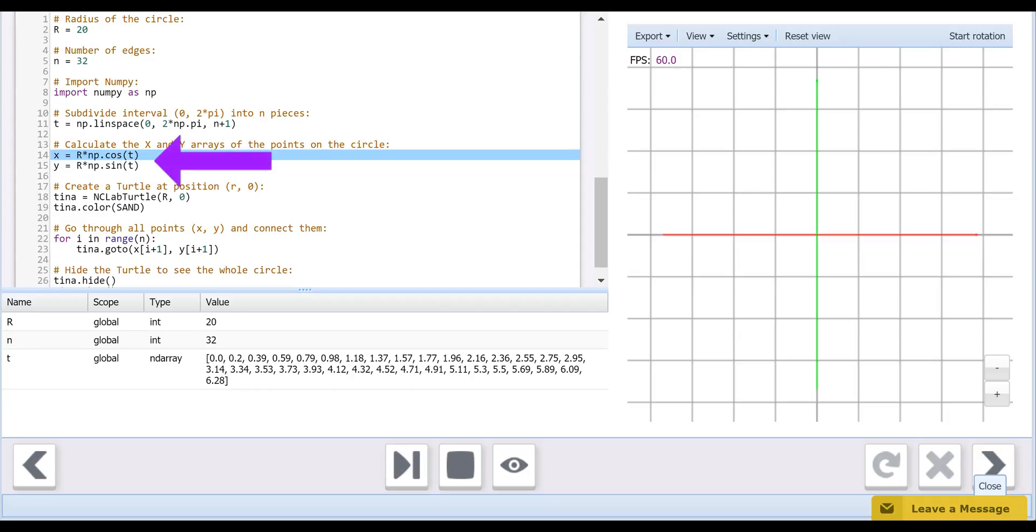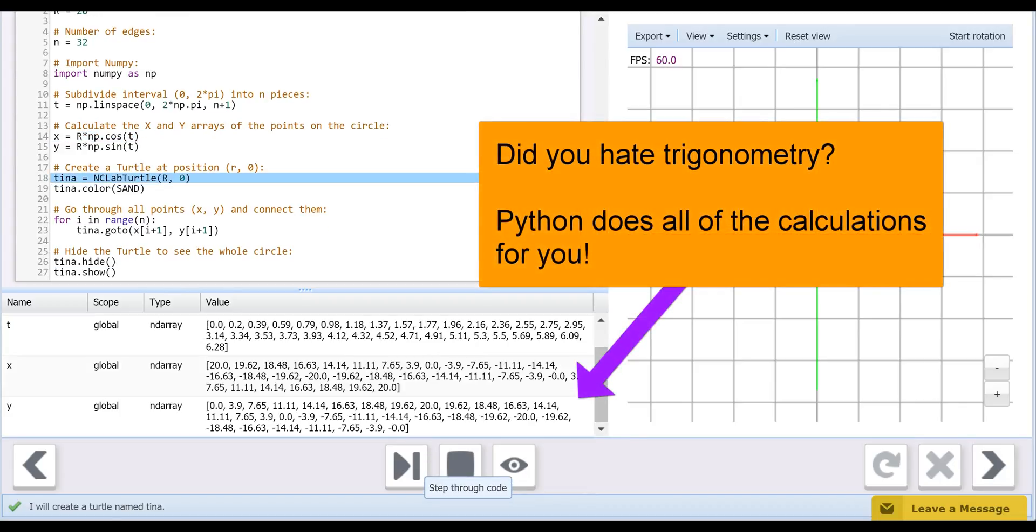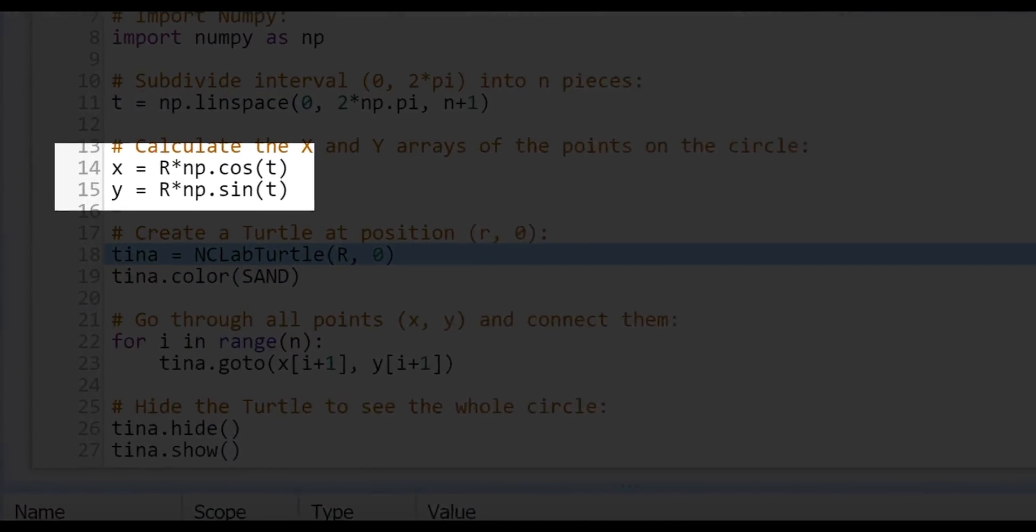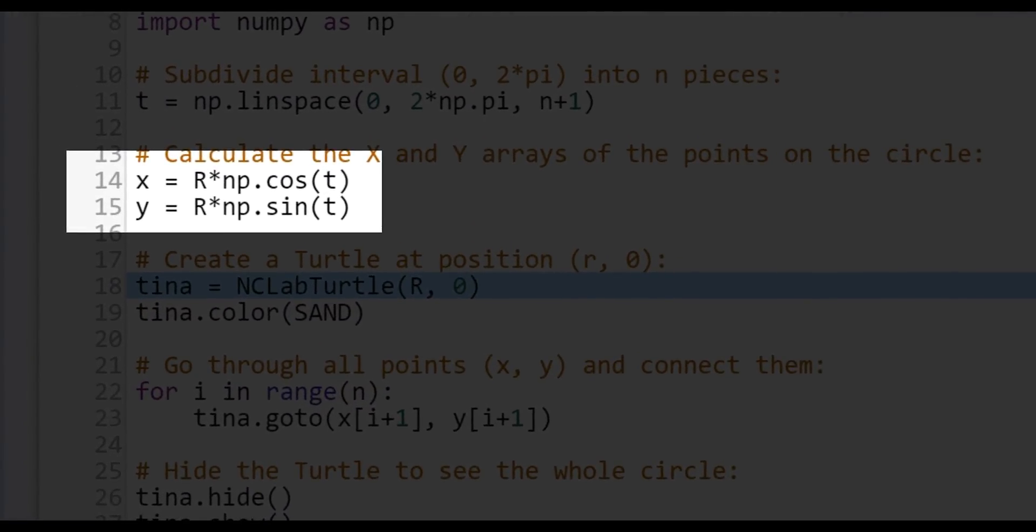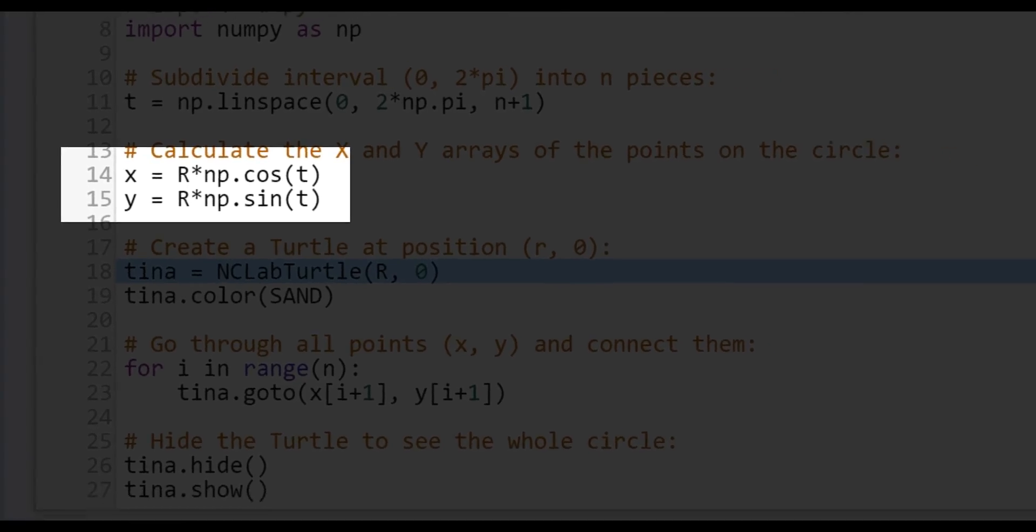On lines 14 and 15, we separate the parametric equation of the circle into two lines of code, one for the X array and one for the Y array. Like pi, cosine and sine are NumPy functions, written as np.cos and np.sin respectively.